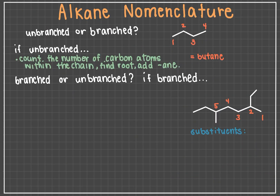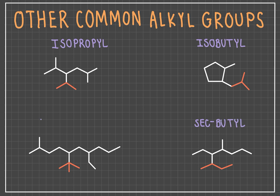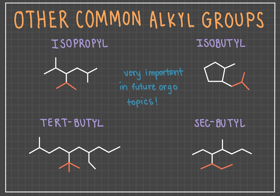For branched alkanes, a branched alkane like the one I have on the right contains branch-like substituents — groups that are bonded to a longer principal or parent chain. Alkyl groups are a type of substituent. They are essentially an alkane with one hydrogen removed and are named with the same prefixes as their alkane counterparts, just with an added "-yl" suffix. A methyl group has one carbon and three hydrogens, an ethyl group has two carbons and five hydrogens, and so forth. Other common alkyl groups you should be able to recognize, highlighted in red, are an isopropyl group, a secondary butyl or sec-butyl group, an isobutyl group, and a tertiary or tert-butyl group. This is not an exhaustive list, of course, but these groups are frequently seen in future organic chemistry topics, so it's important to be able to identify them.